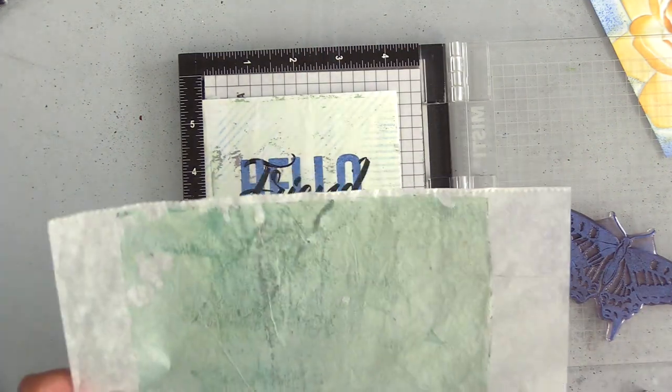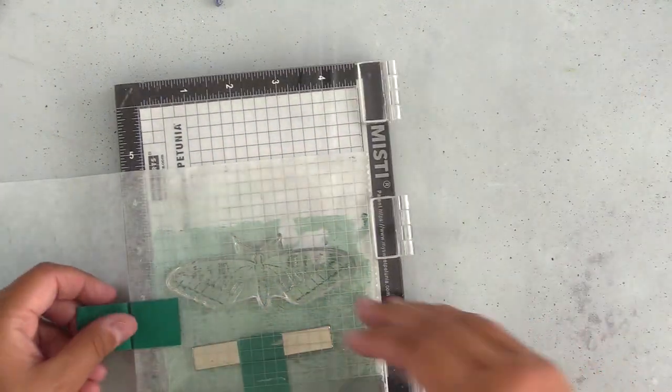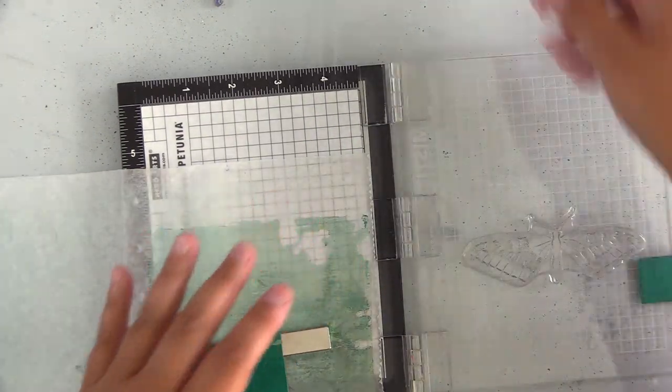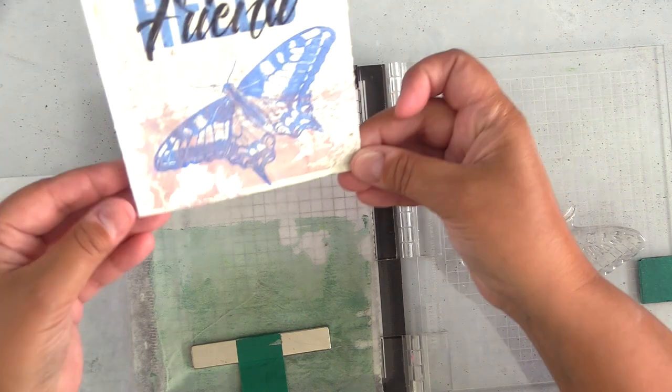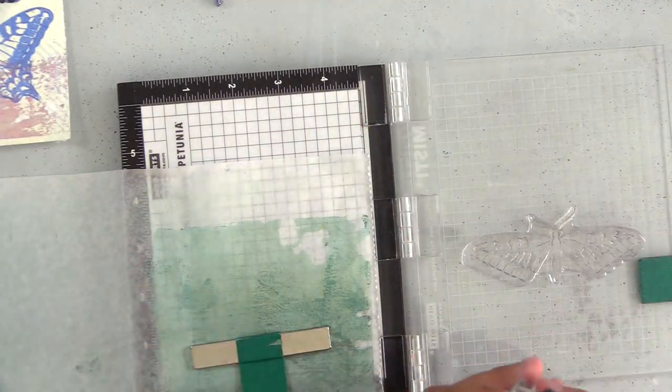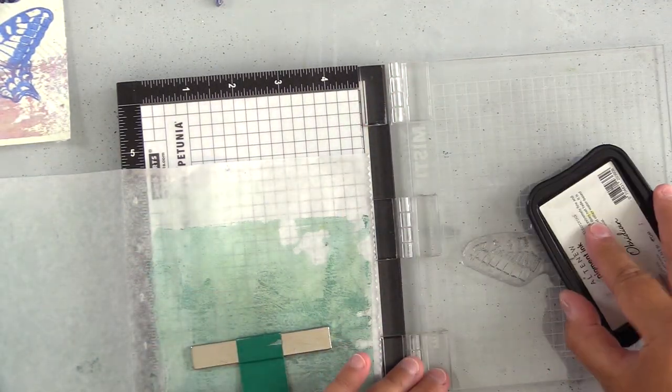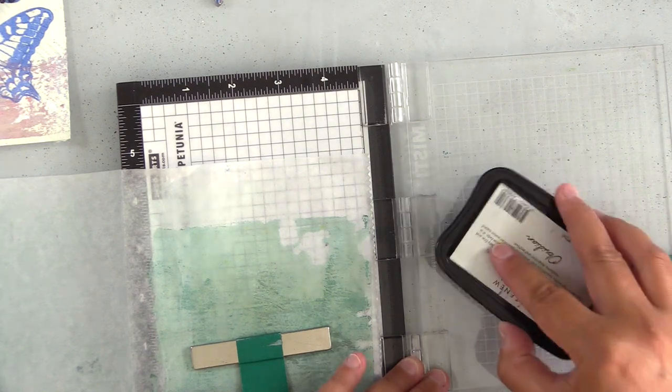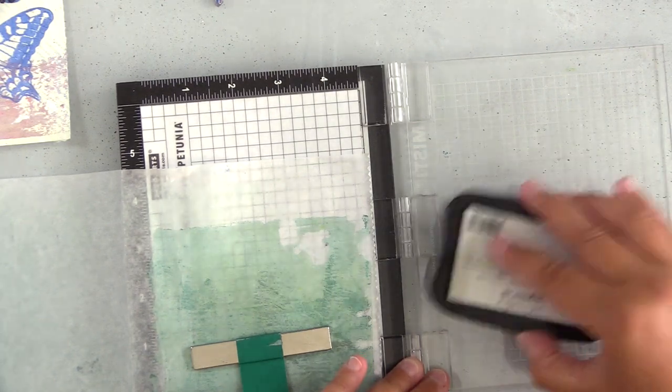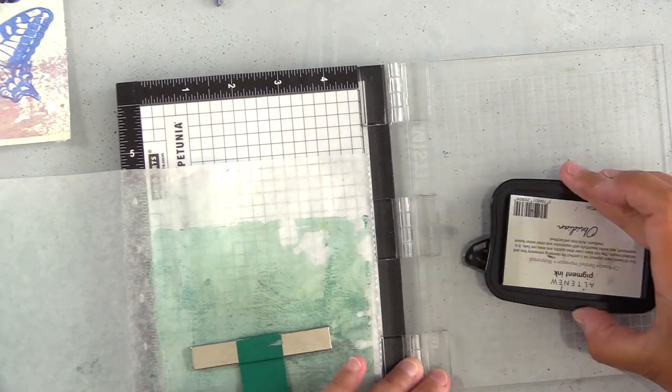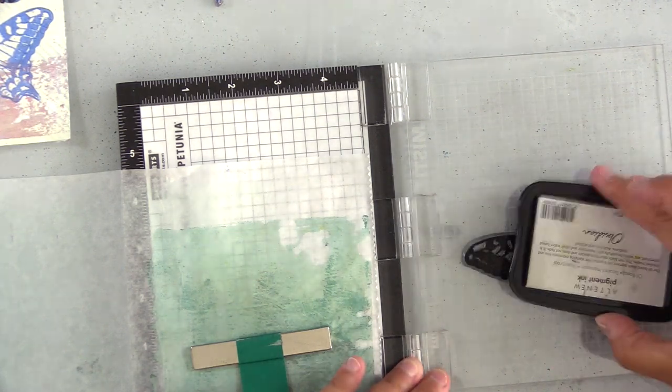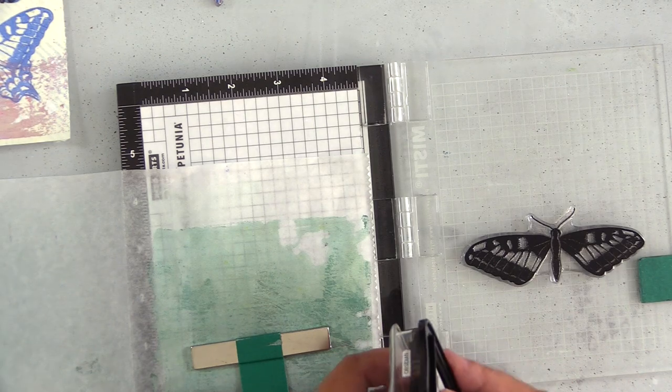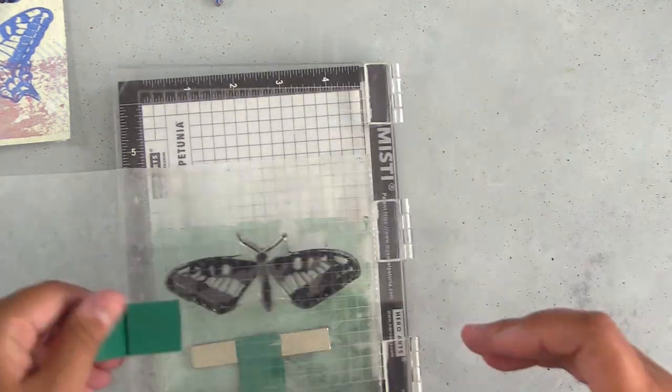This green piece of deli paper that I have here again was from that handmade gel print journal that I referenced, and so I'm going to stamp the top of this butterfly with obsidian pigment ink on top of this green paper. Now this green paint that's on this paper is a metallic paper, so it has a beautiful shimmer to it when it catches the light. And I'll go ahead and die cut this and layer this on top of the butterfly.